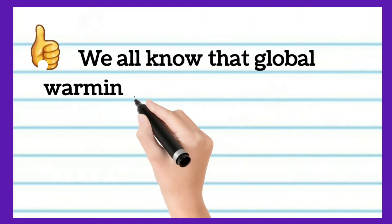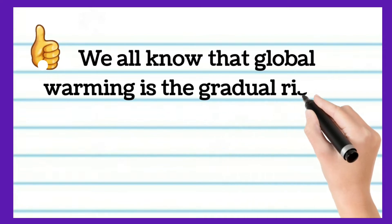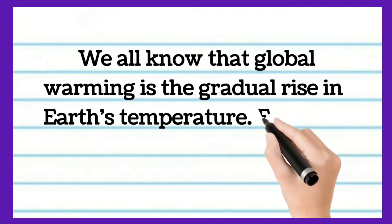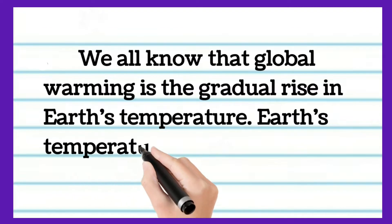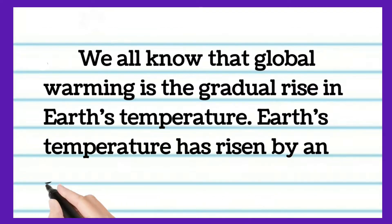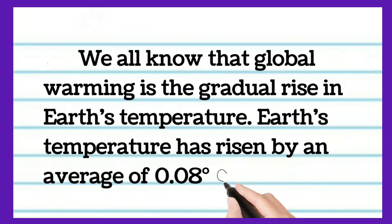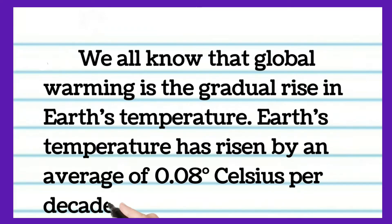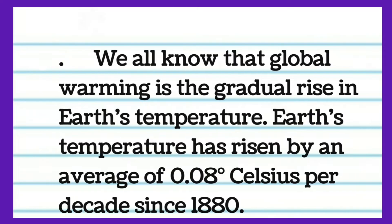We all know that global warming is the gradual rise in Earth's temperature. Earth's temperature has risen by an average of 0.08 degrees Celsius per decade since 1880.